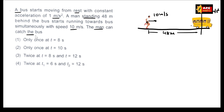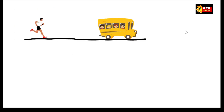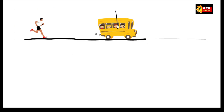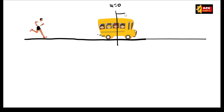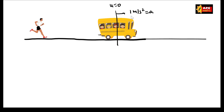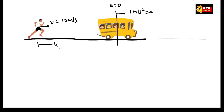The man can catch the bus — but at what time will he catch it? Catching the bus means their locations are the same. The bus has initial velocity zero and acceleration 1 meter per second square, and the man's speed is 10 meters per second. He starts 48 meters behind.